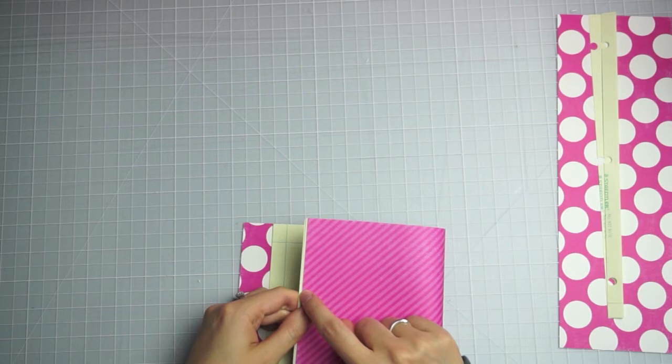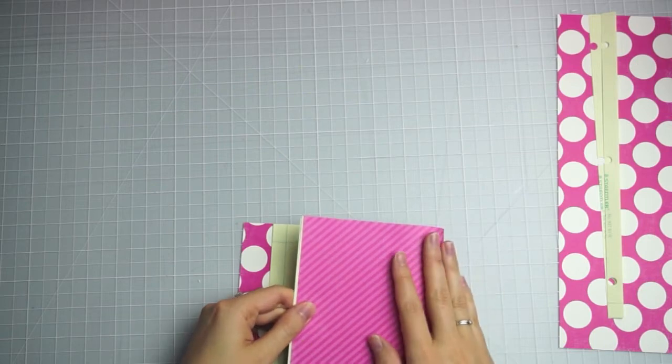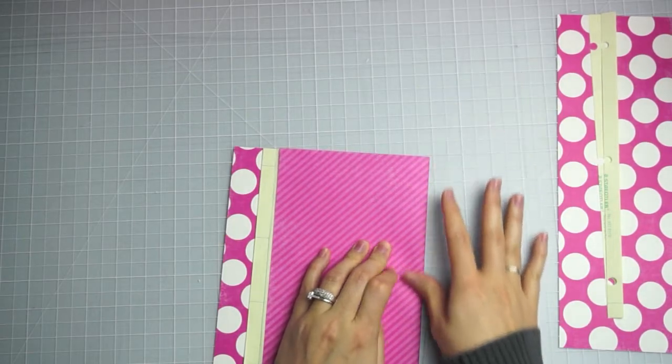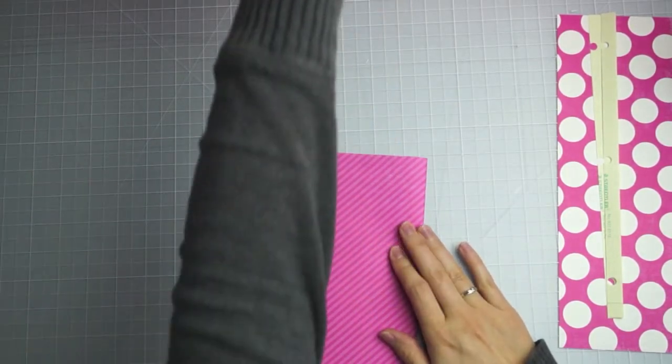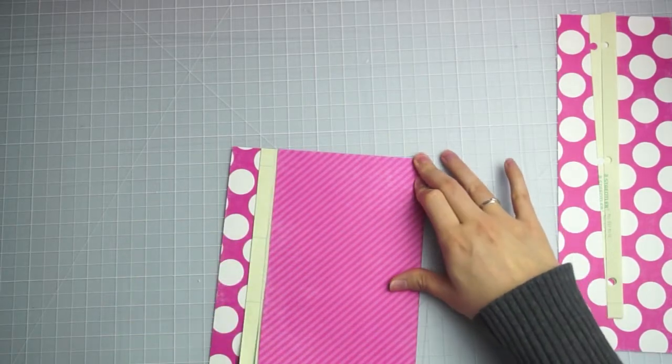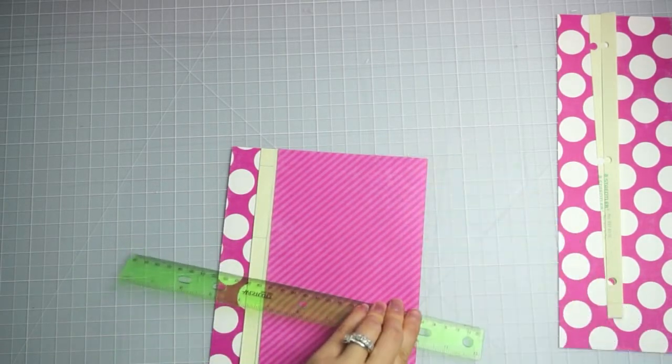And you will notice when I'm folding it the edges start poking out and that's what we're going to end up trimming. I'm going to just make sure I rub that crease really nicely. You could definitely use a bone folder for this. I'm just going to use my cheapy ruler to make a really nice crease on that corner.